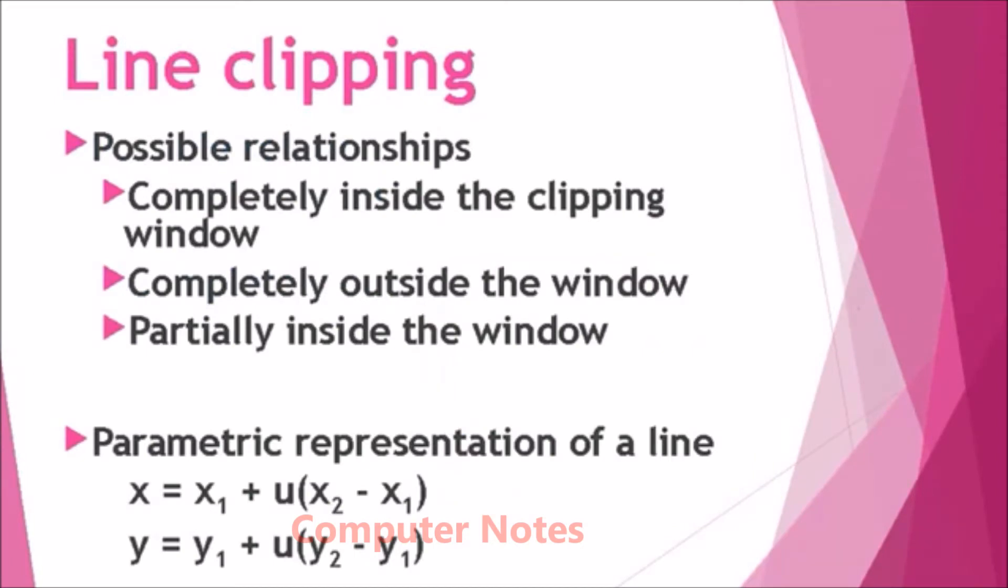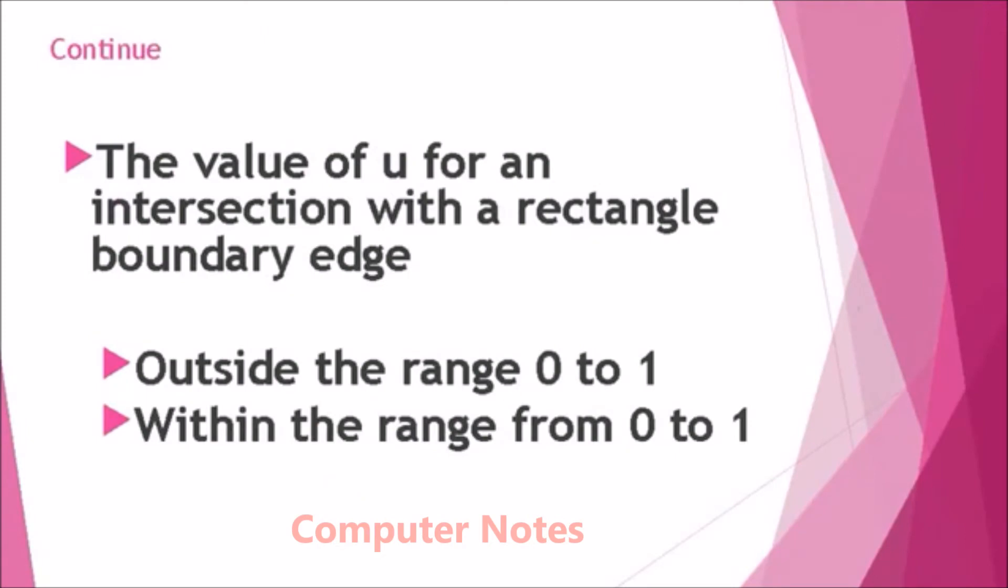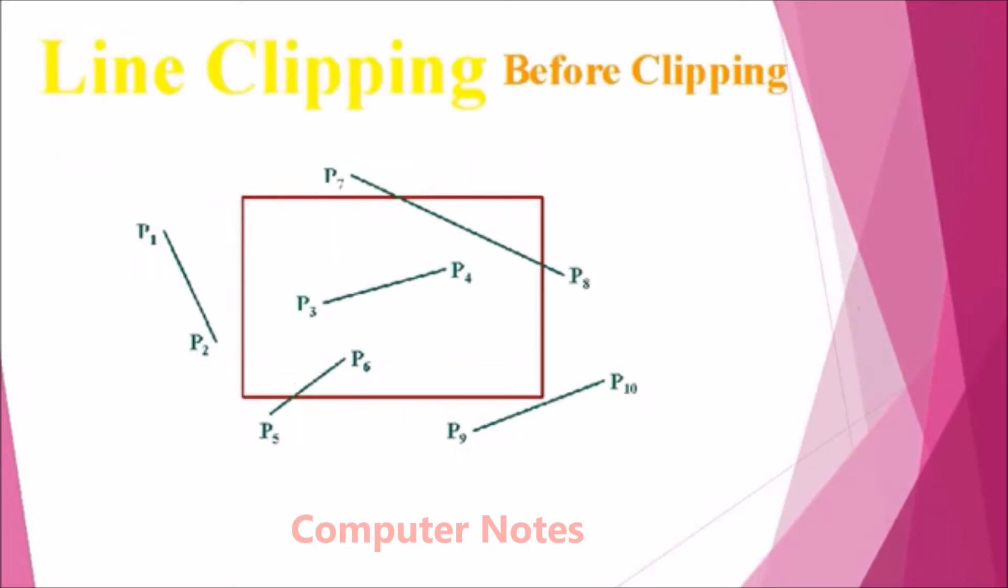So the possible relationships are given here. The value of u for an intersection with a rectangle boundary edge outside the range 0 to 1 or within the range from 0 to 1. So line clipping, we will take this as an example.